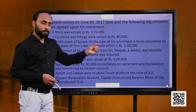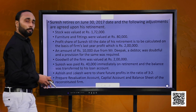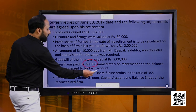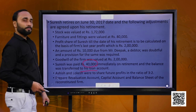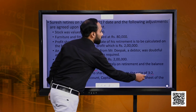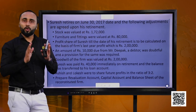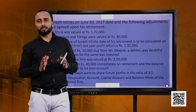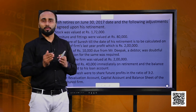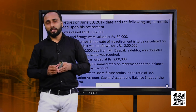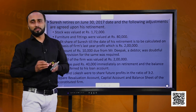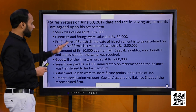Goodwill of the firm is valued at 2 lakh. Suresh was paid 40,000 immediately and the balance was transferred to his loan account. Ashish and Lokesh have decided to share the future profits in the ratio of 3:2. In big questions like this, read the adjustments carefully, keep coming back to them so you do not forget anything, as it is very common for students to miss certain adjustments.